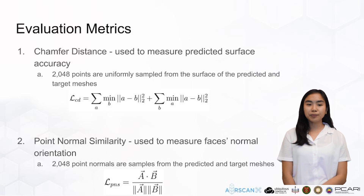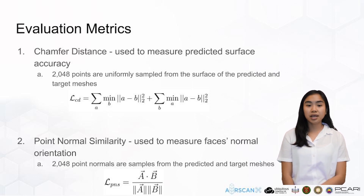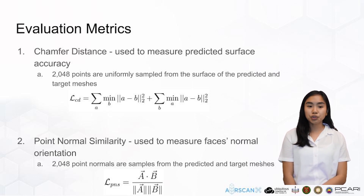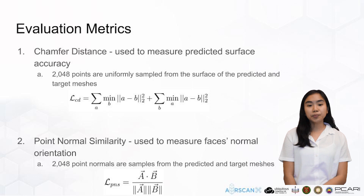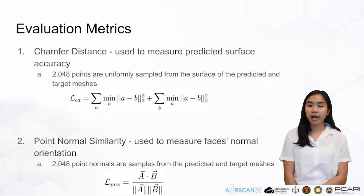To compare the performance of RAIN against the benchmark algorithms BPA and PSR, two metrics were used. The first is Chamfer Distance, and the second is Point Normal Similarity. Chamfer Distance is used to measure the accuracy of the surface score by uniformly sampling points from the predicted mesh and comparing them to uniformly sampled points in the ground truth mesh. Point Normal Similarity is used to measure the accuracy of the surface normals in the predicted meshes.